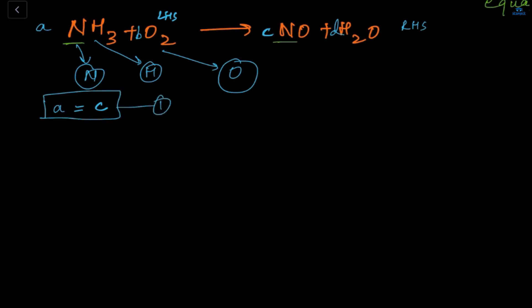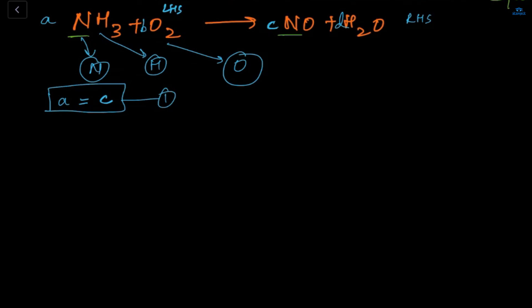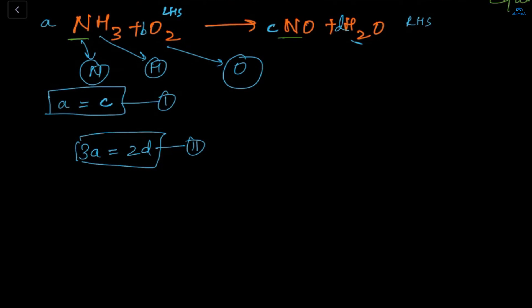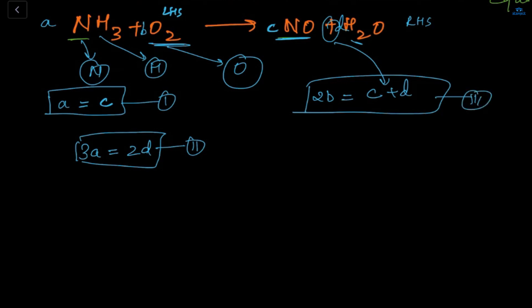Next we deal with hydrogen. On the left-hand side there are three hydrogens; on the right-hand side there are two. So we write: 3a = 2d. This is my second equation. For oxygen, on the left-hand side there are two, and on the right-hand side there is one in NO and one in H2O. Since there's a plus sign, we write: 2b = c + d. This is my third equation.